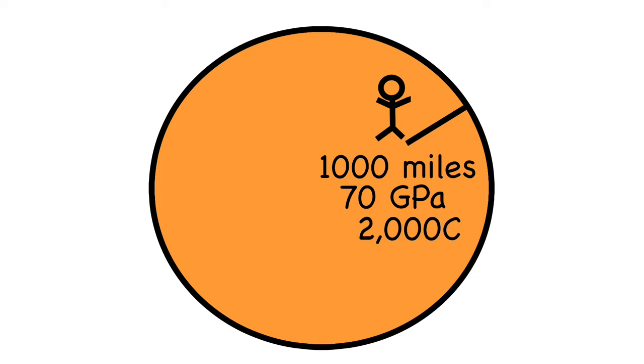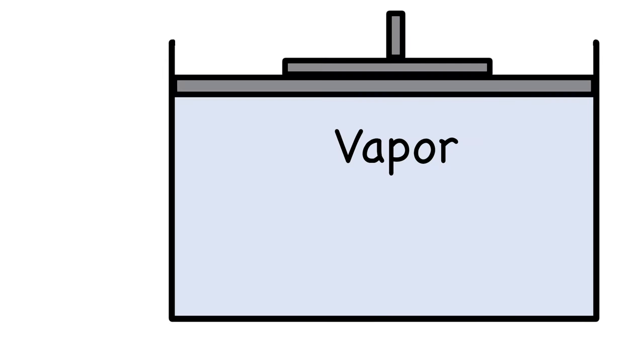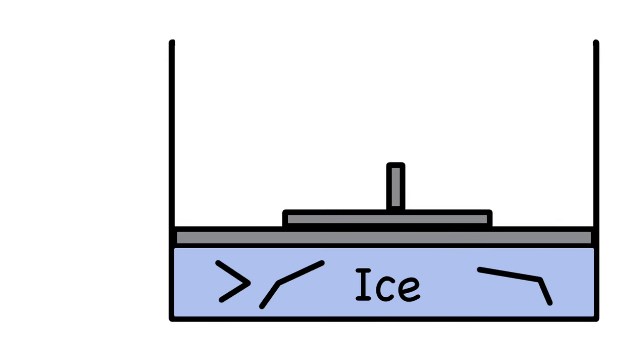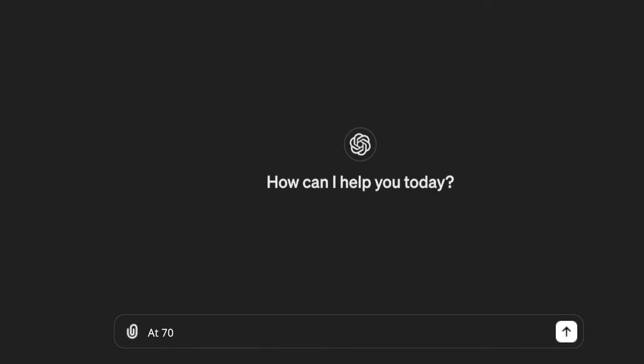Now, one good thing is that temperature and pressure are kind of opposite. High temperature makes things melt and boil. High pressure makes things freeze, so they might cancel each other out. At 70 gigapascals and 2000 Celsius, what materials form a transparent fluid or gas?